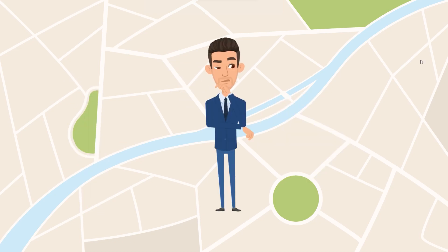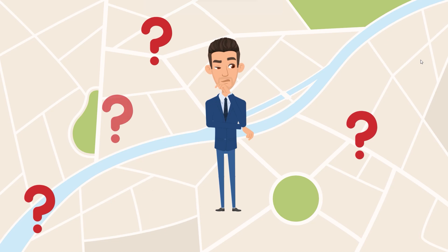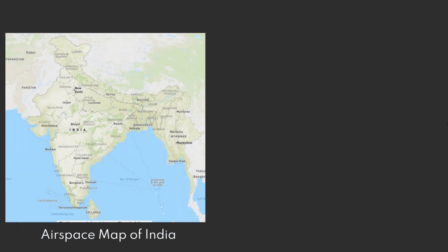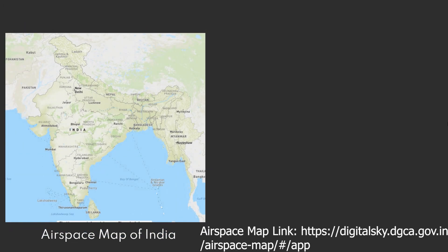If you own a drone, there is a good chance you may not be aware of the areas in which you can fly. The DGCA's interactive airspace map can assist you in this regard. The Ministry of Civil Aviation launched an airspace map of India for drone operations on 24 September 2021 for the first time. The map is now available on the Directorate General of Civil Aviation's Digital Sky platform.